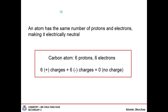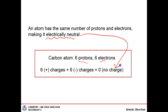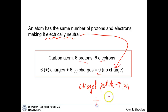The number of protons must be the same as the number of electrons in order for the overall atom to be electrically neutral — meaning no charge. If a particle has a charge, we don't call it an atom anymore; we call it an ion. If it's a positive charge, we call it a cation. If it's a negative charge, we call it an anion. We will cover this more later in this topic.